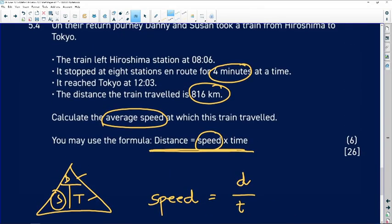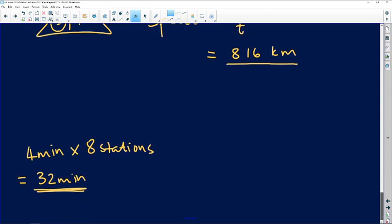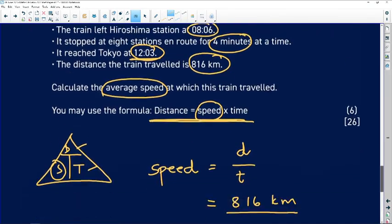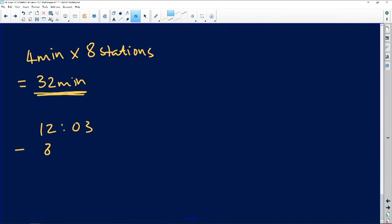In terms of time, we can't just use this time as it is because they traveled from this time to this time, so those two times need to be subtracted by each other. So it's 12:03 minus 8:06. You need to be careful when you do your subtractions of time. That gives me three hours and 57 minutes.